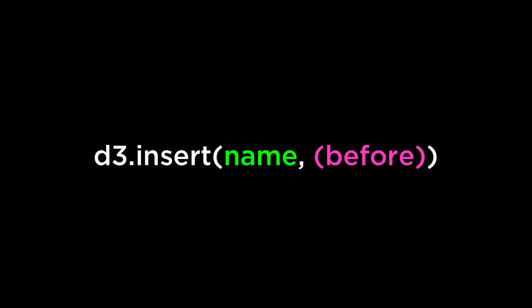Next, let's take a look at the D3 insert operator. This inserts a new element with the specified name before the element matching the specified before-selector for each element in the current selection. If the before selector does not match any elements, then the new element will be the last child, as with the append operator. Then it returns a new selection containing the inserted elements.